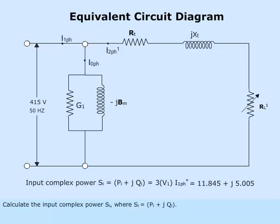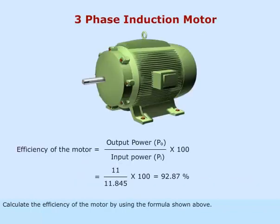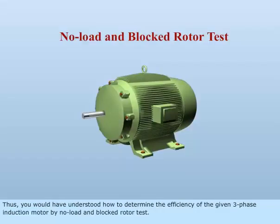Calculate the input complex power SI, where SI equals PI plus jQI. Calculate the efficiency of the motor by using the formula shown above. Thus, you have understood how to determine the efficiency of the given three-phase induction motor by no-load and blocked rotor test.